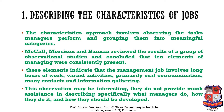The characteristics approach involves observing the tasks managers perform and grouping them into meaningful categories. McCall, Morrison, and Hanan reviewed the results of a group of observational studies and concluded that ten elements of managing were consistently present. These indicate that the management job involves long hours of work, varied activities, primarily oral communication, many contacts, and information gathering. However, these observations do not provide much assistance in describing specifically what managers do, how they do it, and how they should be developed.